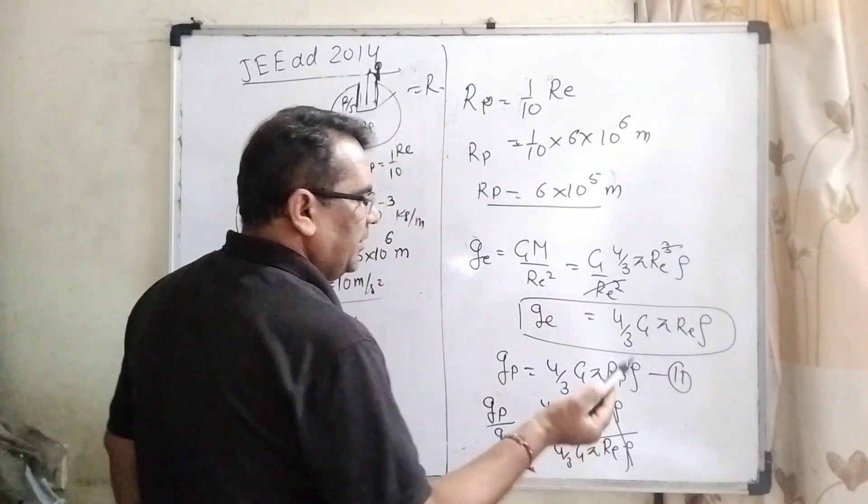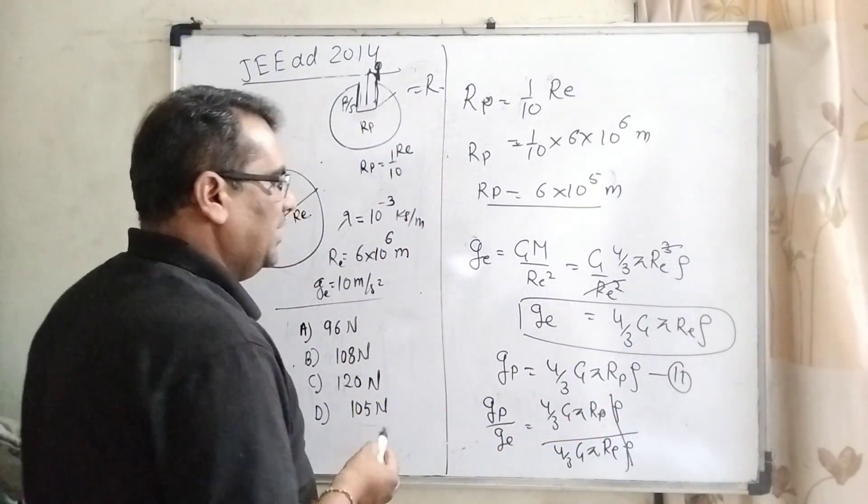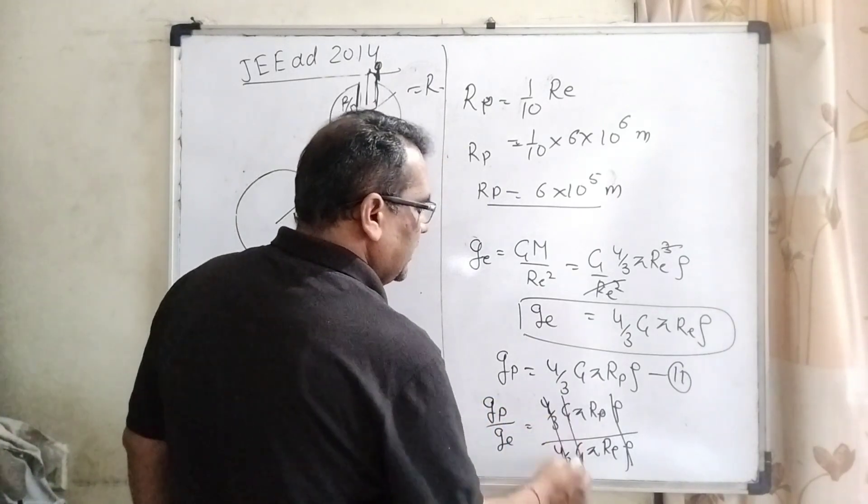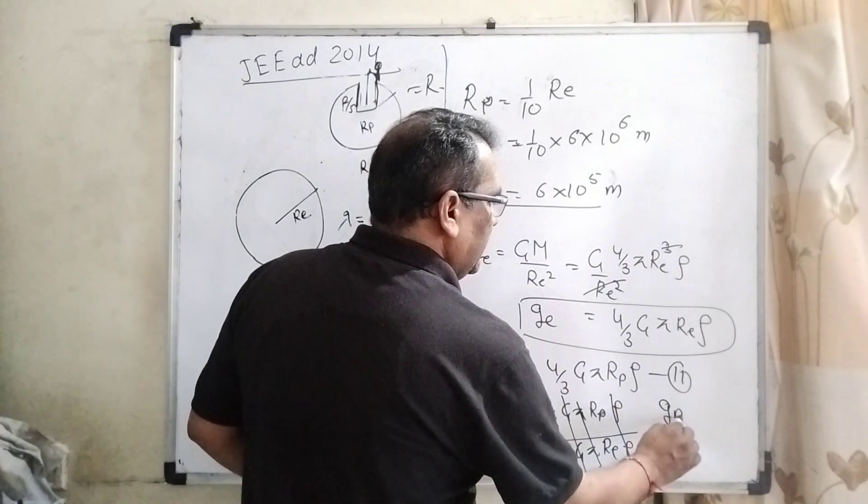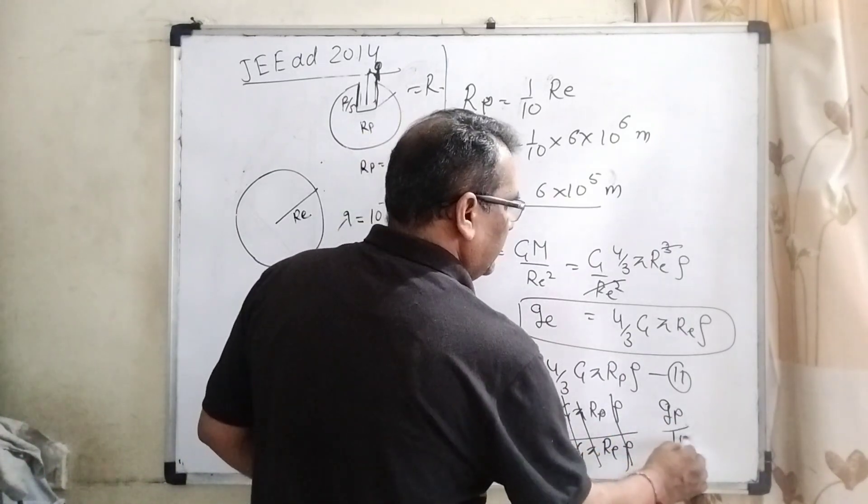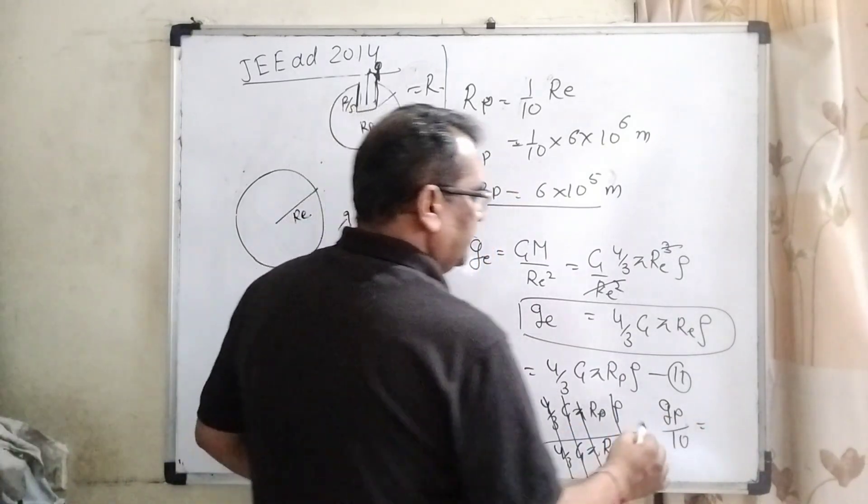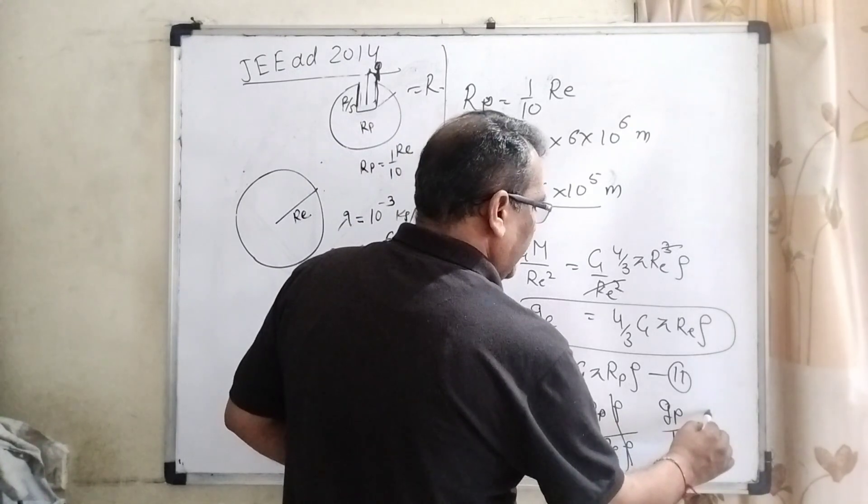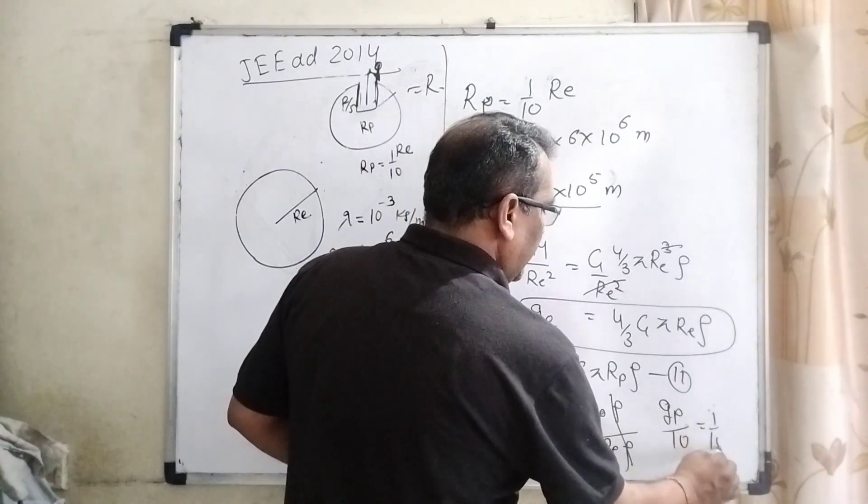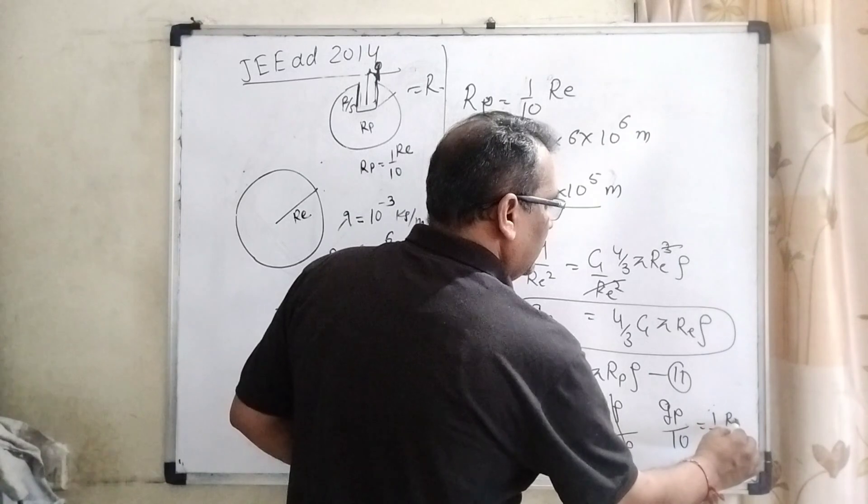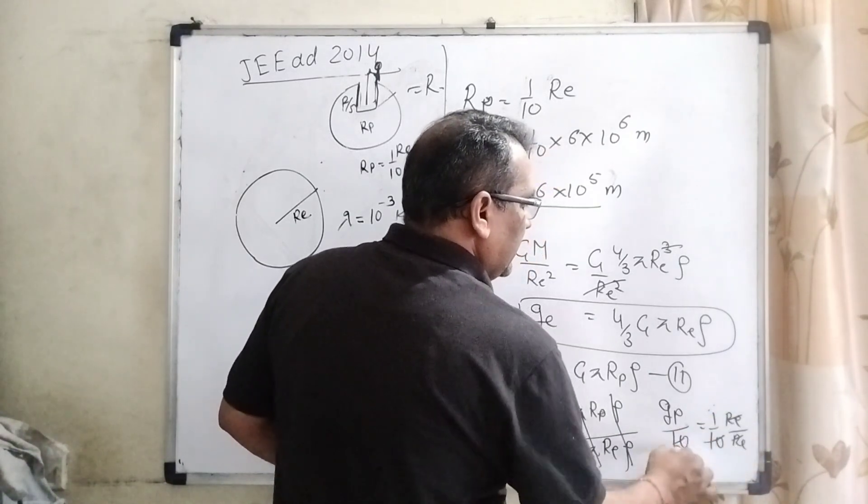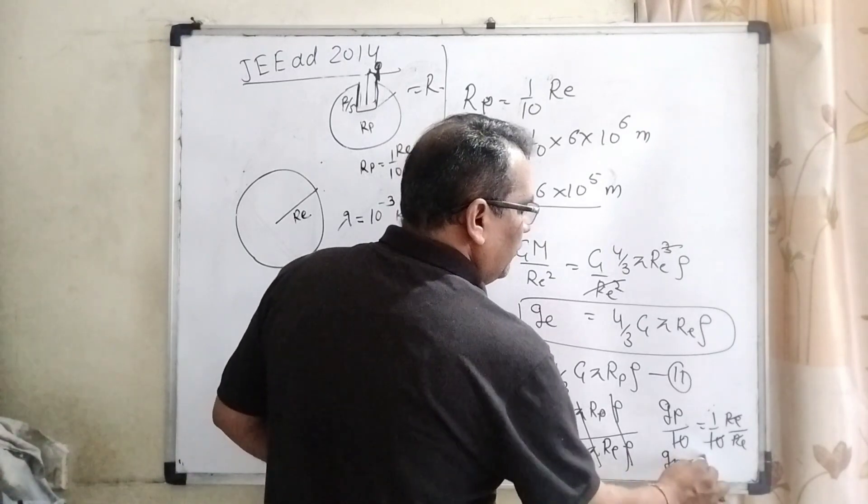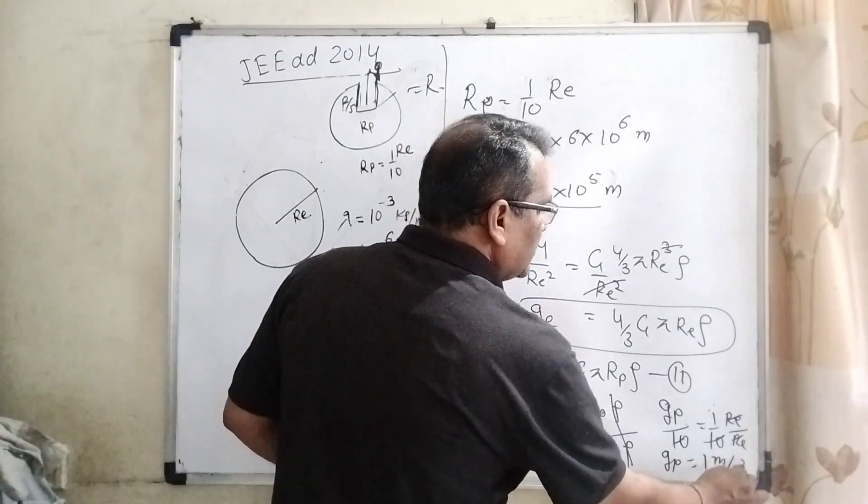You can see that density cancelled because density of both the planets are same. 4 by 3 cancel out, G cancel out and pi cancel out. Then, gP here, gE is given 10 and Rp is 1 by 10 times of Re. Here, Re cancel out, 10 cancel out means gP equal to 1 meter per second square.